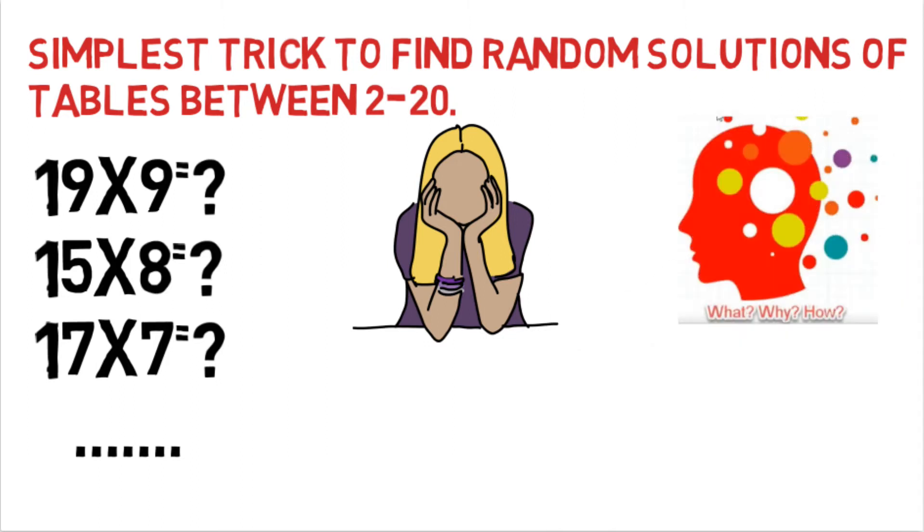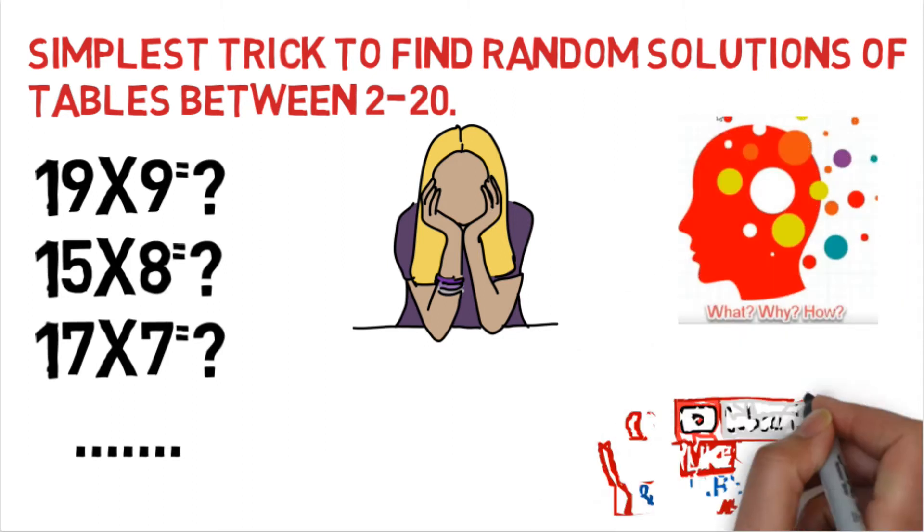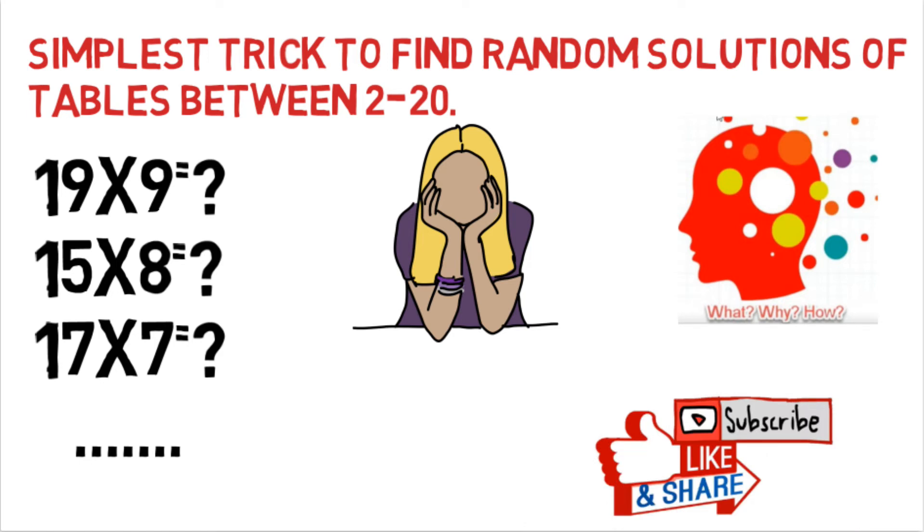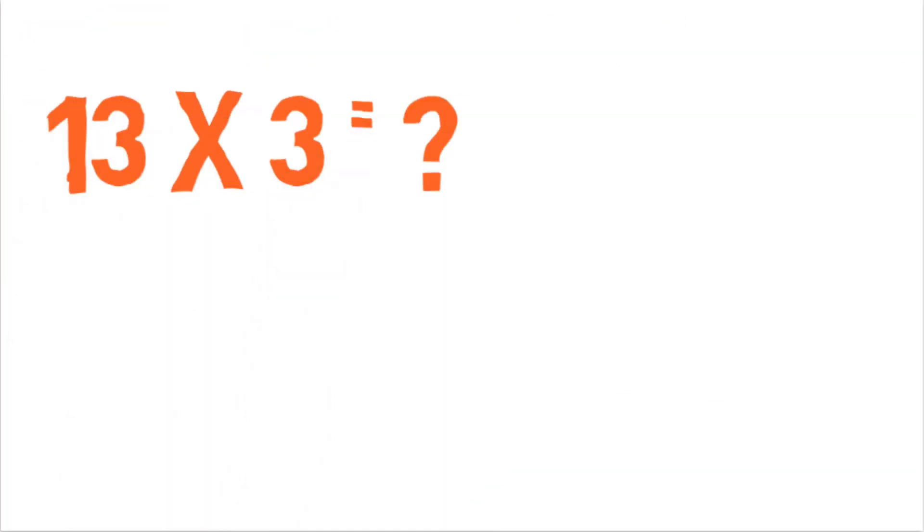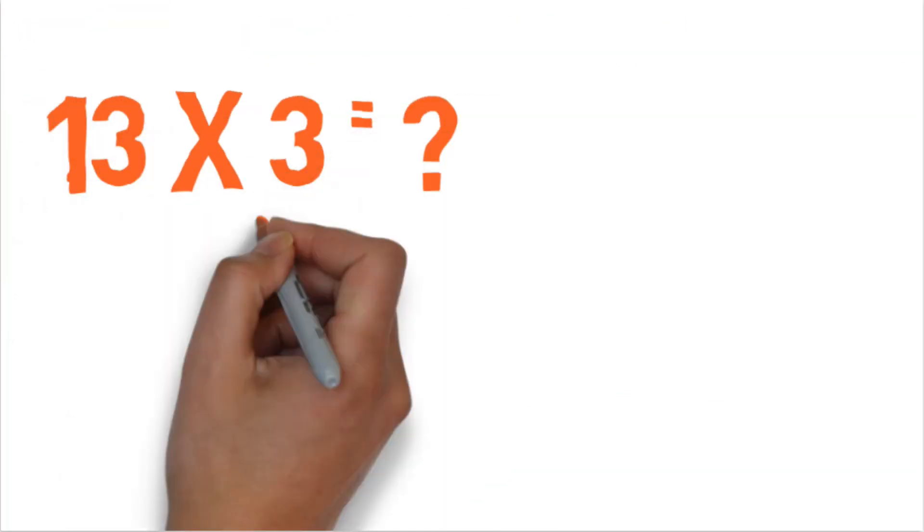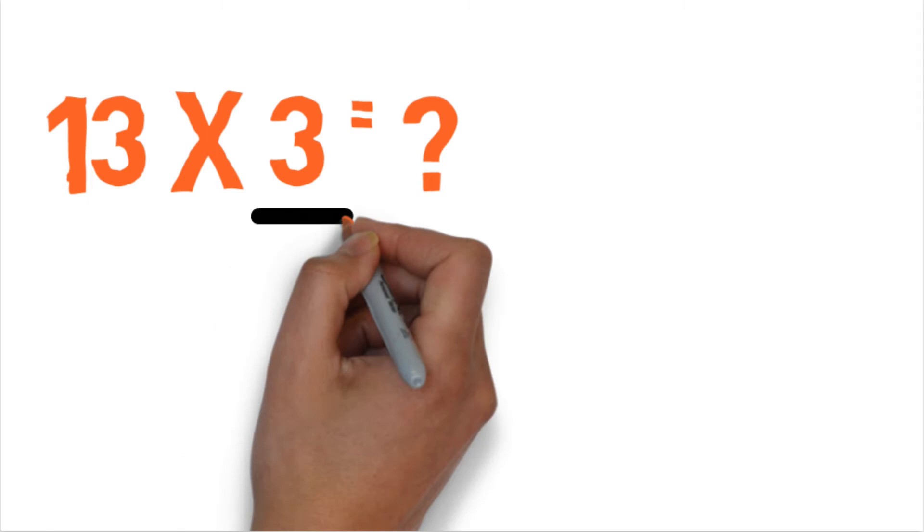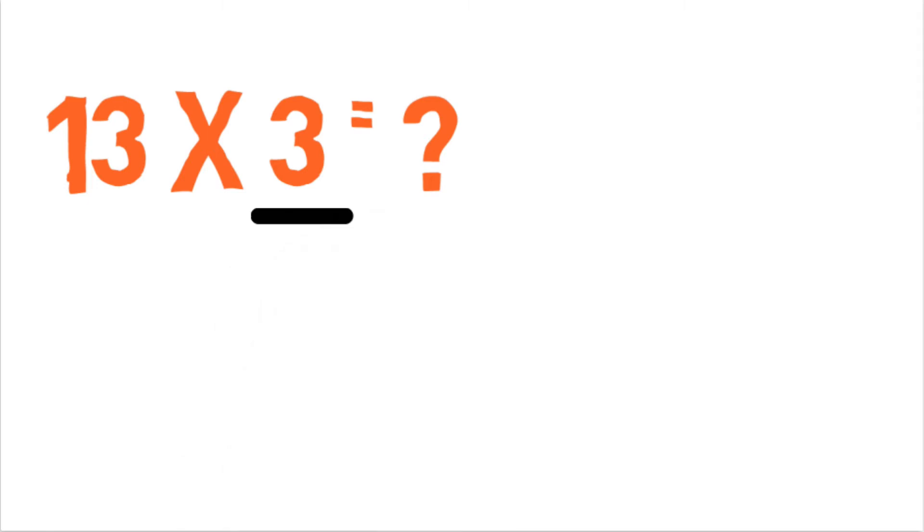So let's start friends. We'll start with 13 multiplied by 3. So 13×3. What we'll do is take 3 and then we'll add zero to it, so it will become 30.